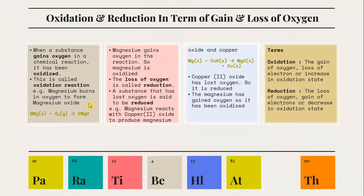The loss of oxygen is called reduction. A substance that has lost oxygen is said to be reduced. For example, magnesium reacts with copper oxide to produce magnesium oxide and copper. Copper oxide has lost oxygen, so it is reduced. On the other hand, magnesium has gained oxygen, so it has been oxidized.